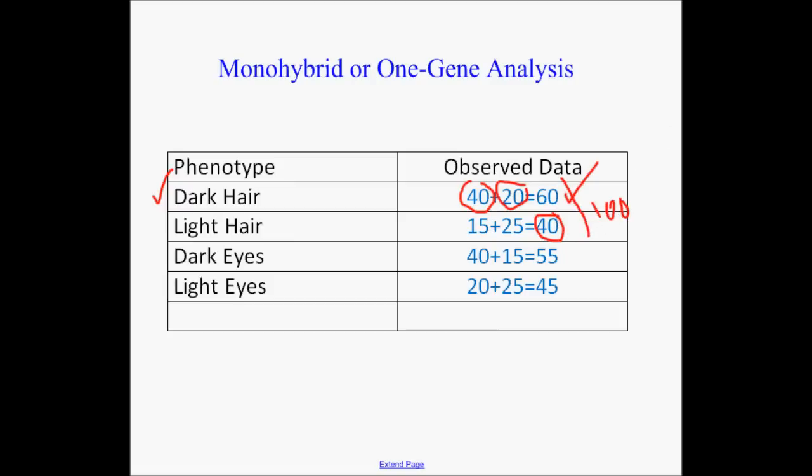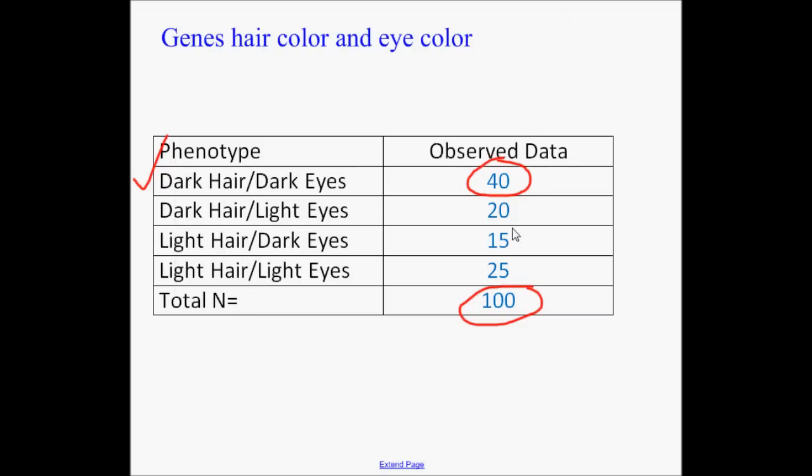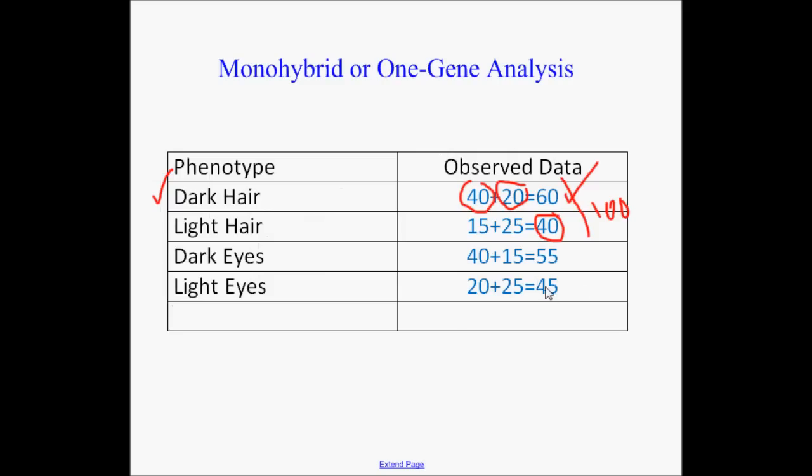We then look at the data and do the same thing for eyes. So let's go back and look at the eyes again. You had 20 of them with light eyes and 25 of them had light eyes here. So that would give us 45. And then how many of the 100 would have dark eyes? It would be 55. And once again, they add up to 100. Simple enough, right? So you crunch the two-gene phenotypes to get a one-gene analysis.